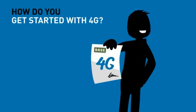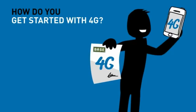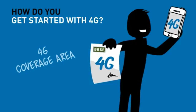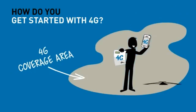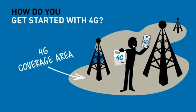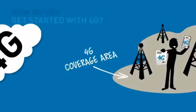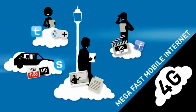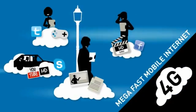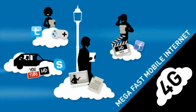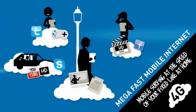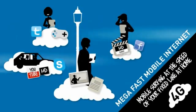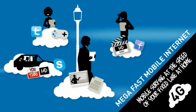Getting started with 4G is really easy — you only need three things: a base subscription that includes 4G, a mobile device that supports 4G, and a 4G coverage area that you need to be in. With 4G, you get extremely fast mobile internet that's just as fast as your fixed internet at home, even while you're on the go.